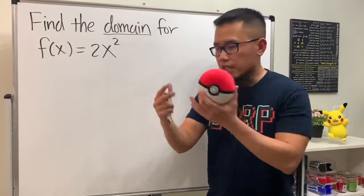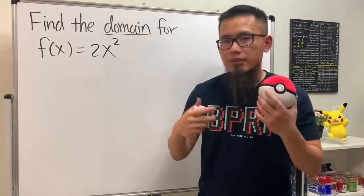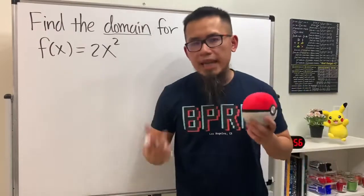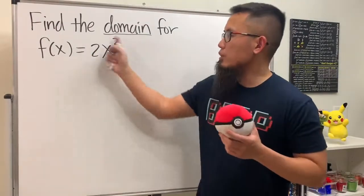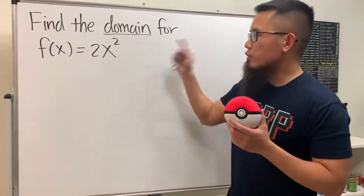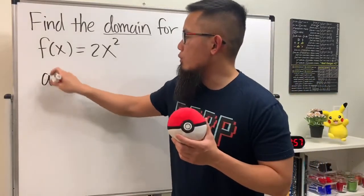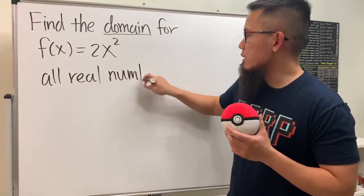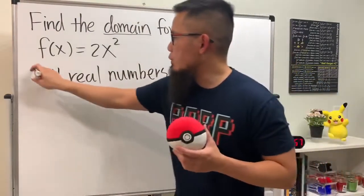Well, if you look at this there's no x on the bottom and the x is also not inside the square root. When you have 2x² you can plug in any x values into this function. Therefore, the domain for this is just all real numbers, meaning there's no restrictions - all real numbers.